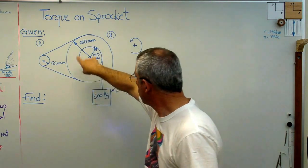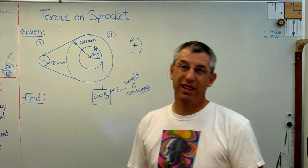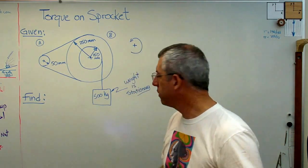I've got a weight hanging from a drum attached to the big sprocket. The weight is 500 kilograms. In English units, that's going to give you something like 1,100 pounds, something like that.